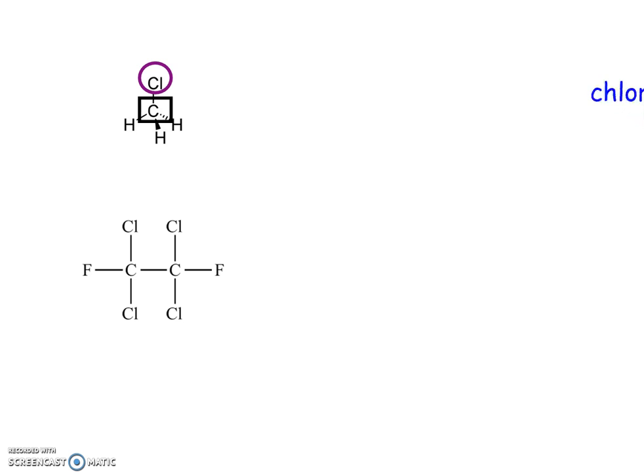So the chlorine gives us chloro, one carbon in the chain is meth, and then it's all single bonds, so ane. So this first one here is chloromethane.